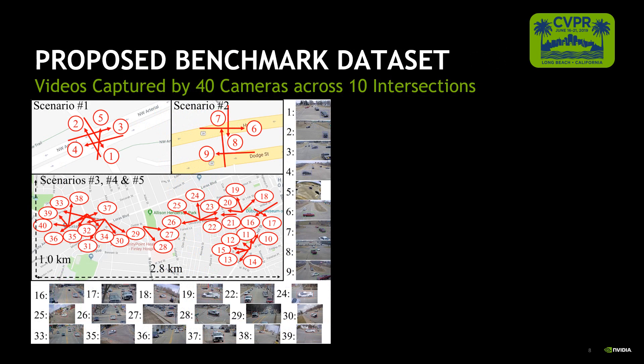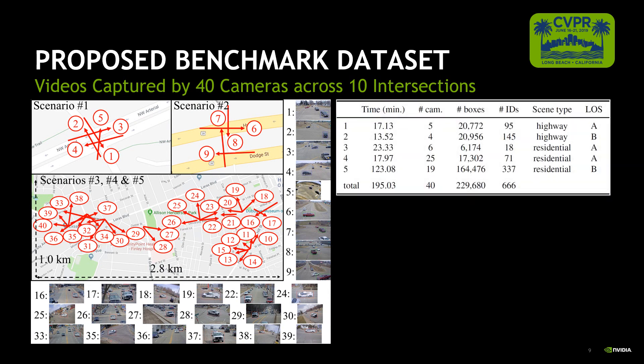Now you can see a more detailed overview of the CityFlow benchmark. There are five scenarios in CityFlow, covering both highway intersections and residential areas with various traffic flow conditions. In total, we have 40 cameras located at 10 traffic intersections. The total length of all the videos is about 3 hours and 15 minutes, and the total number of vehicle identities is 666.